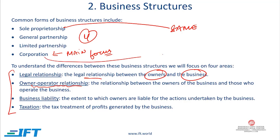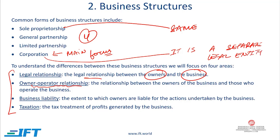When we talk about a corporation, it is a separate legal entity — completely separate from the owners, who are separate natural persons. We will also talk about business liability: how much the owners are liable for the actions of the business. If something goes wrong in the business, does it come back to the owners? In a sole proprietorship, since they are one and the same, it will come back to the owners, but not in the case of a corporation.